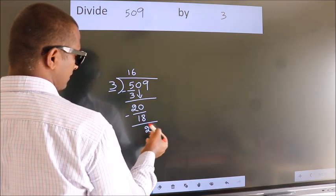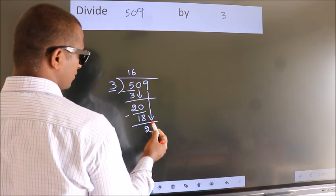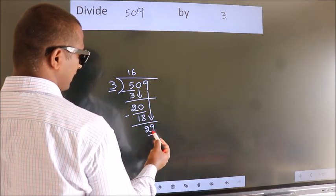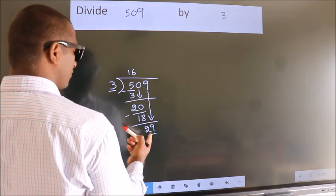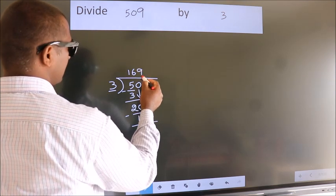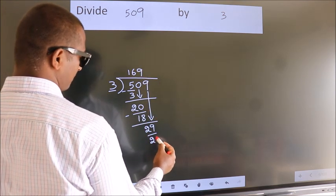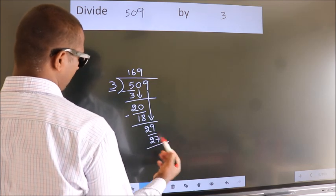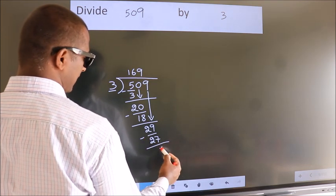After this, bring down the beside number. So, 9 down. So, 29. A number close to 29 in 3 table is 3 nines, 27. Now, we subtract. We get 2.